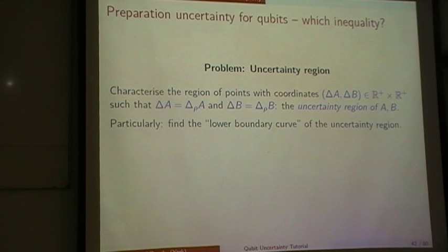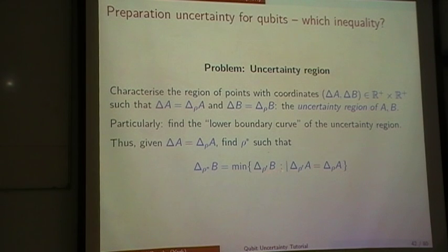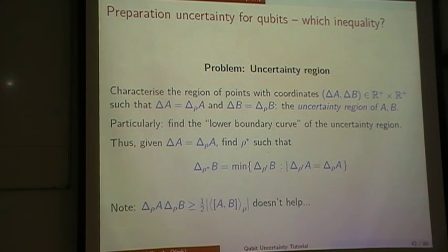We want to find a lower bound curve for that region. Given the constraint — say we fix delta A to be delta-rho A — we want to find a rho-star so that delta-rho-star B is the minimum over all states rho-prime for which delta A is the same as the original. The standard uncertainty relation is of no use to answer that. So why ever did we stop there?